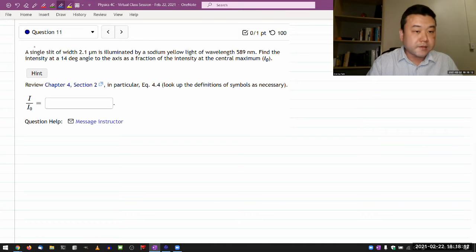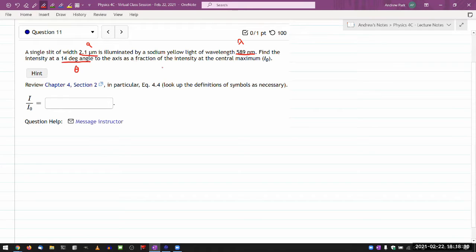So it says that a single slit of some width is illuminated by some light of some wavelength. Find the intensity at some angle to the axis as a fraction of the intensity at the central maximum.